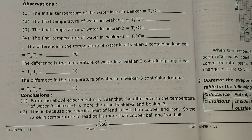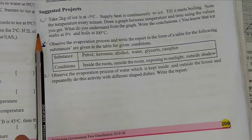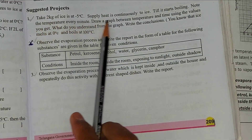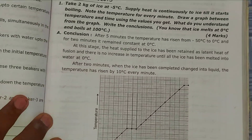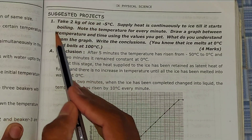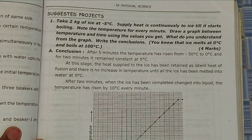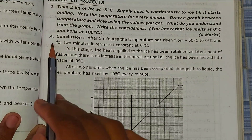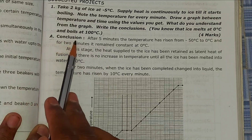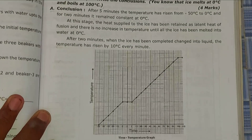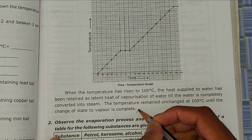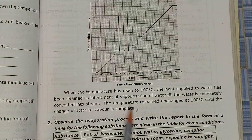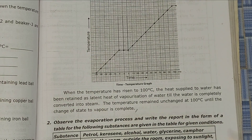Now I will go to Suggested Project Work. First let's see the first question in the textbook. You can see the Suggested Project Work first question here. Now see the first question answer in the Question Bank. You can see the question and the answer starting here. The first question answer ends here.